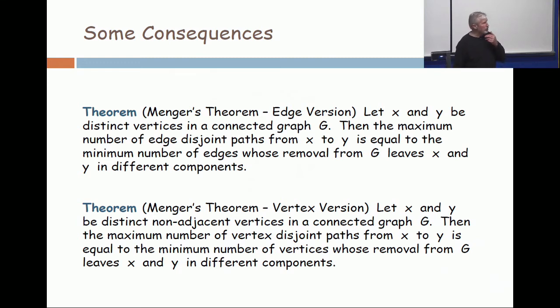There's a vertex version of Menger's theorem as well. If you take any two non-adjacent vertices and then talk about disjoint paths in the strong sense, vertex disjoint except for starting and ending point, then it's simply how many vertices do you have to remove to make X and Y in different components. Whatever that minimum is, you can find that number of paths. And again, network flows does the trick for you.